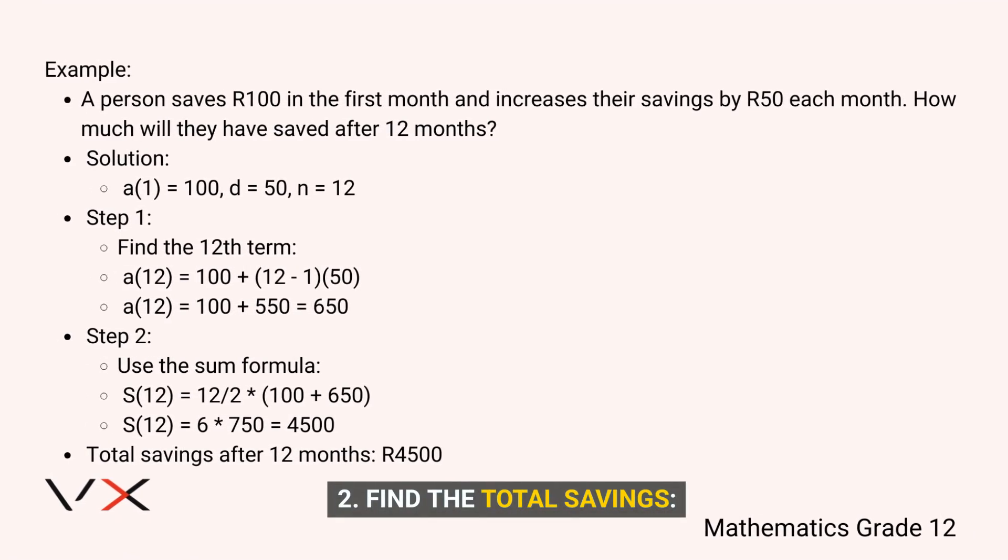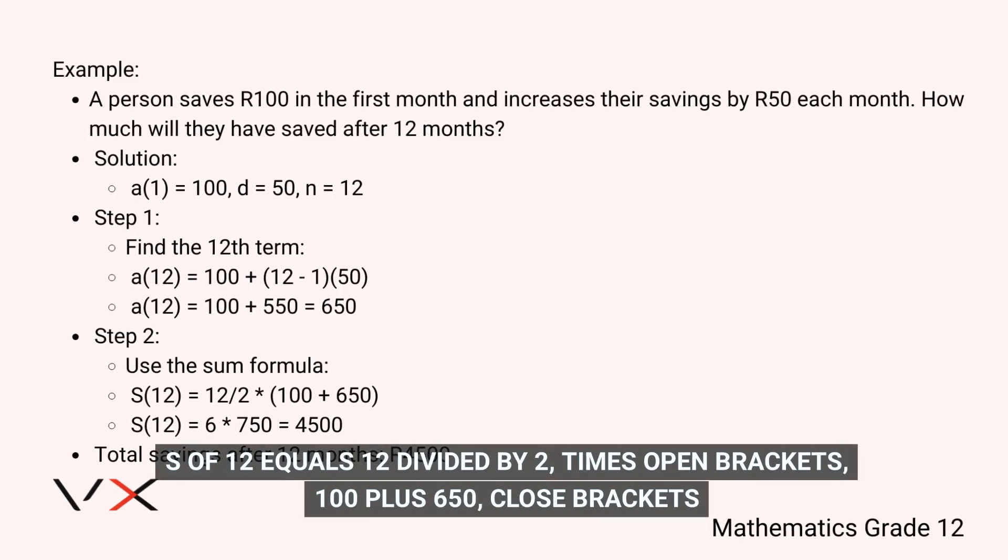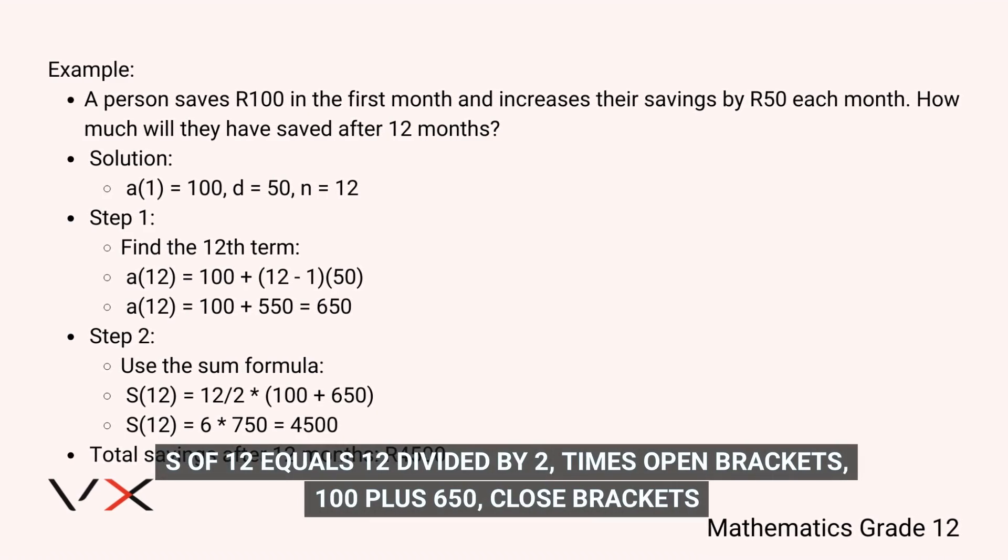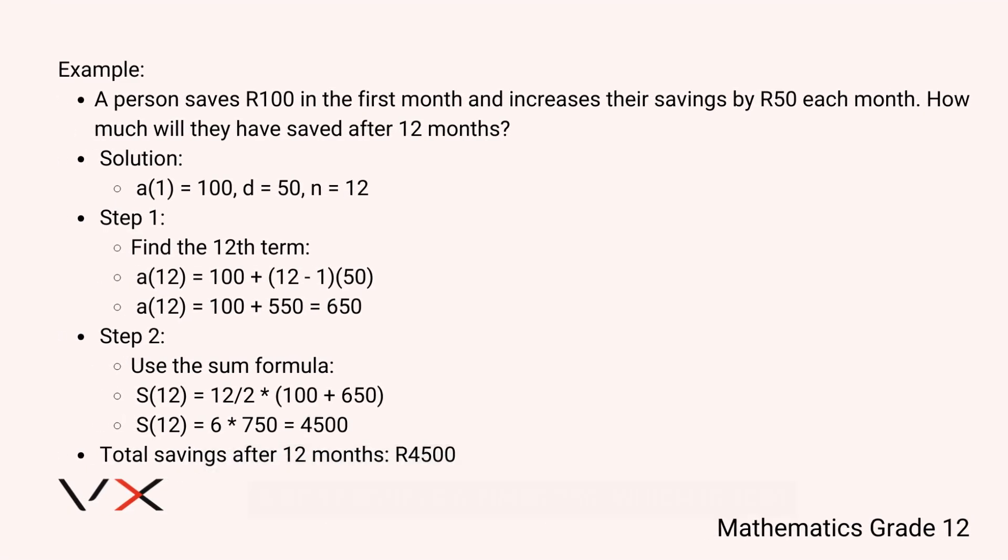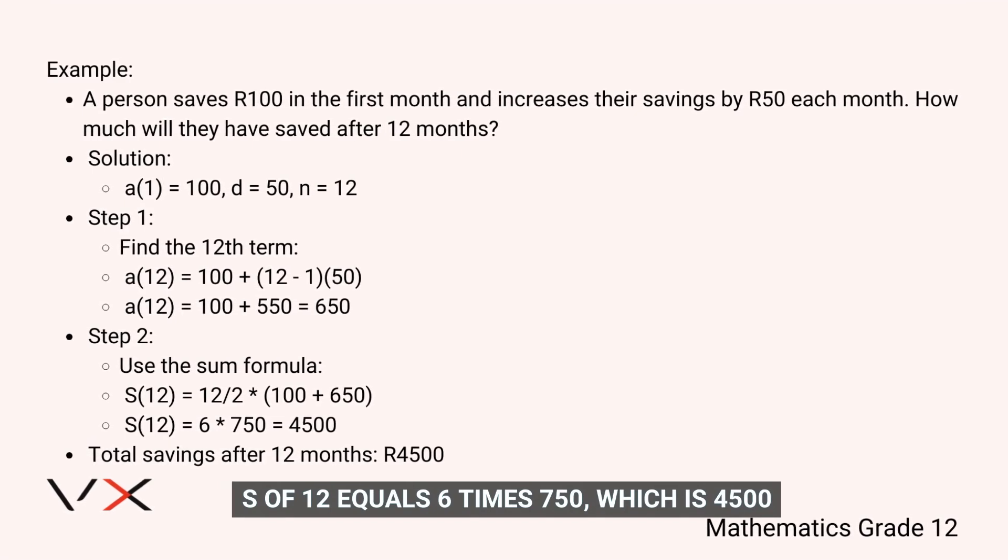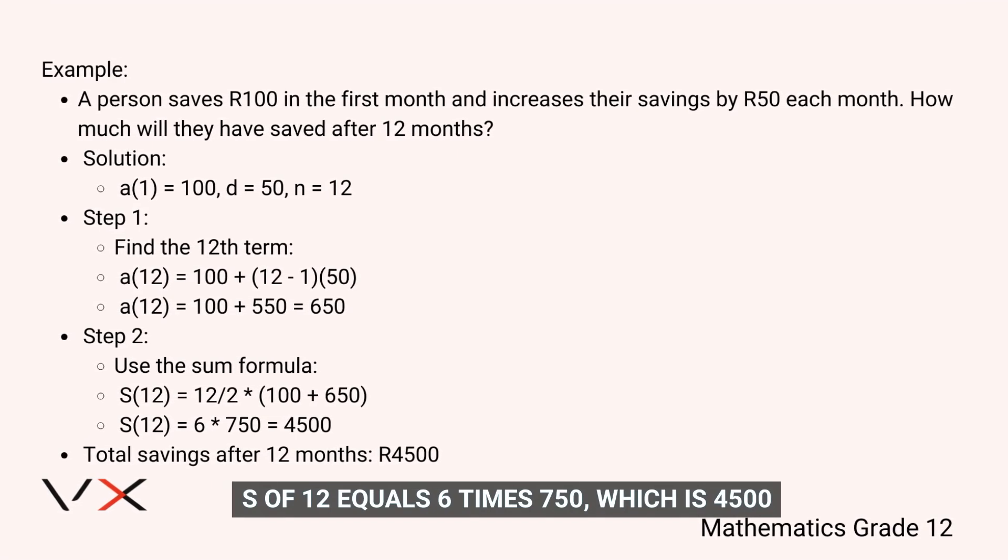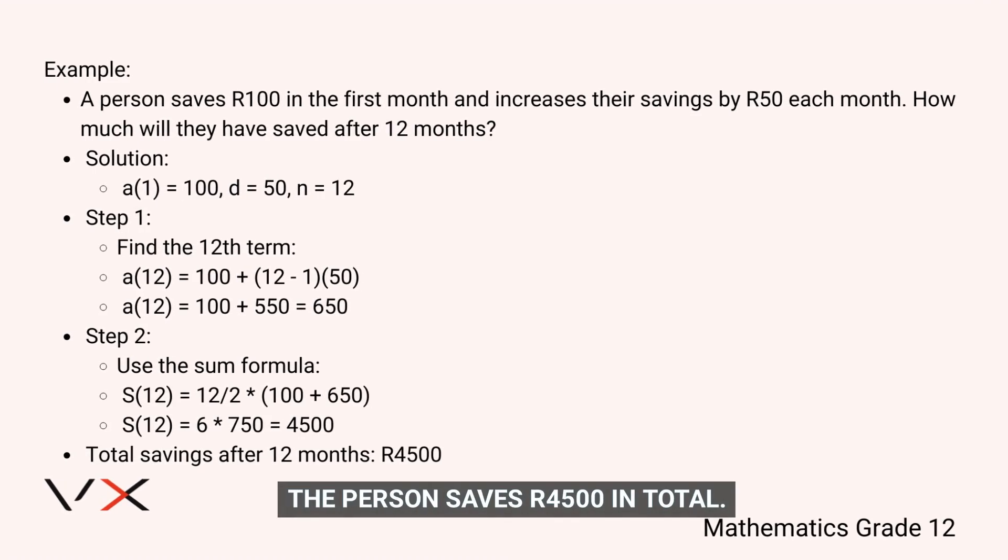Step 3: Find the total savings. S(12) = 12/2 × (100 + 650). S(12) = 6 × 750, which is 4,500. The person saves 4,500 Rand in total.